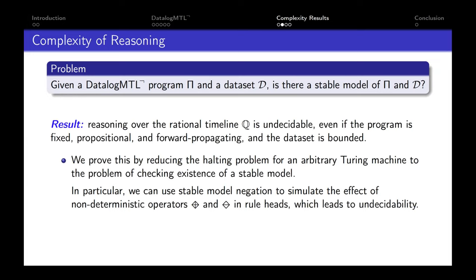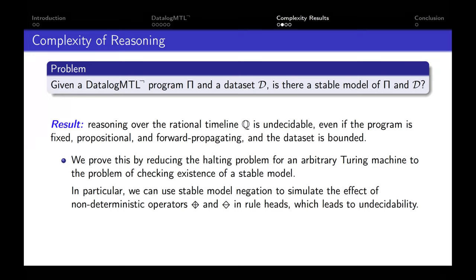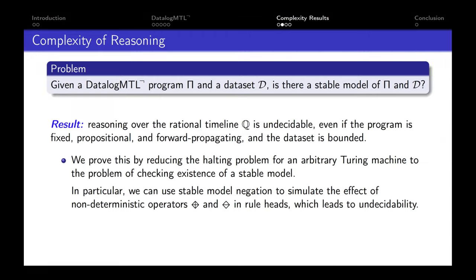Our first result is that reasoning for DatalogMTL with stable model semantics is undecidable over the rational timeline, even if the program is fixed — specifically, if the program is propositional and belongs to the forward propagating fragment, even with only bounded datasets. We prove this by reduction from the halting problem for a Turing machine. The key insight is that stable model negation can be used to simulate the effect of non-deterministic operators like diamonds in the head, which leads to undecidability.